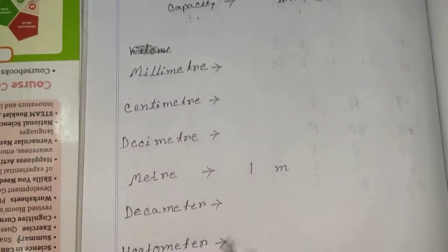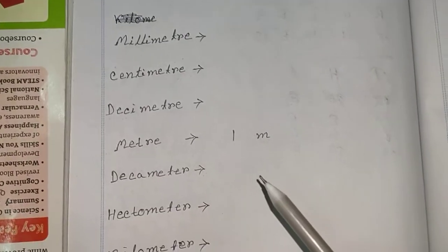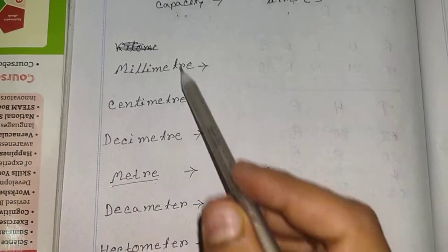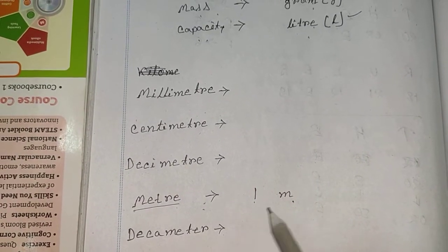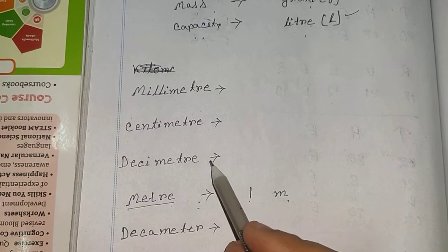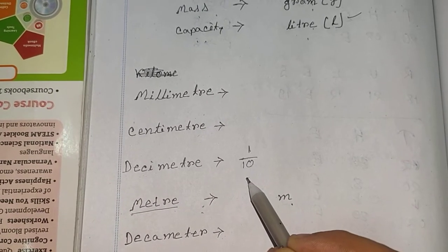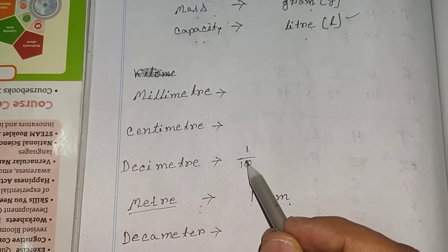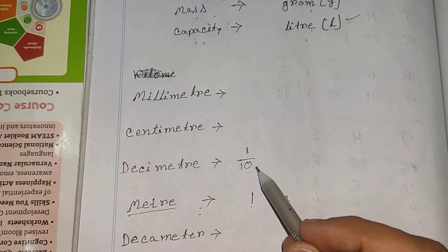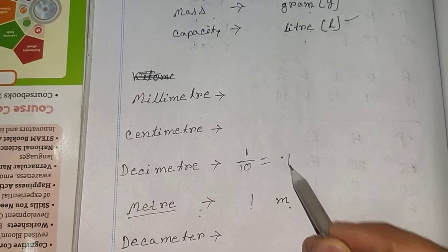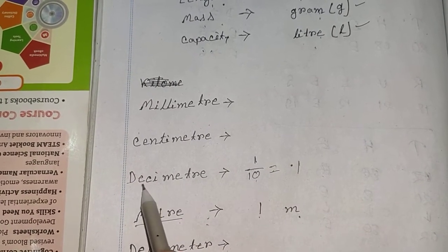I have made a chart here and as an example I take meter. So we have the standard unit meter — one meter. Now if we go upward on the chart it becomes a smaller unit than meter. If we convert one meter to decimeter we divide by ten, so one divided by ten, which as a decimal fraction is 0.1.